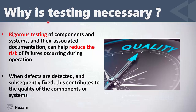The next section of chapter 1 talks about the importance of testing. The title is 'Why is Testing Necessary?' Testing is necessary because when we do testing on components and systems and their associated documentation — the requirements and the user stories — this reduces the risk of failures in the operation environment. When the developer fixes these defects, this contributes to quality.